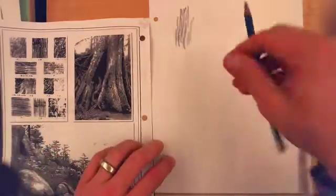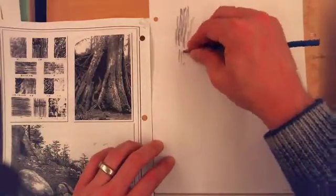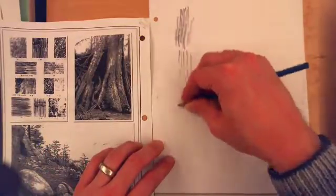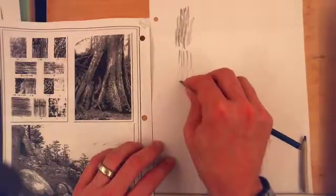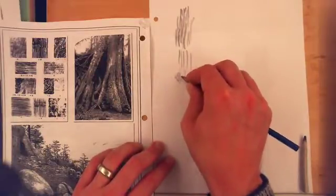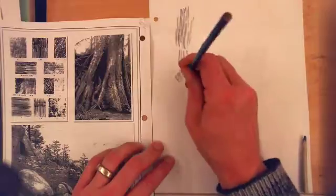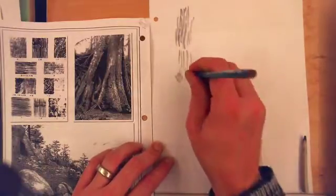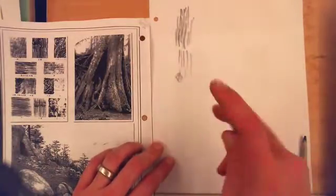These would be considered contour where you're working kind of up and down like this. Gesture lines are those kind of real squiggly lines, real loose. And then stippling, those were those little dots that you can create.